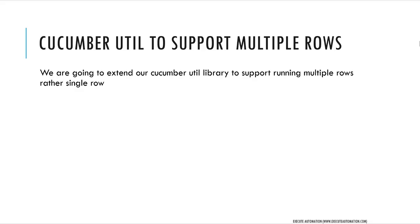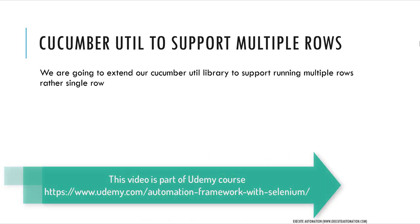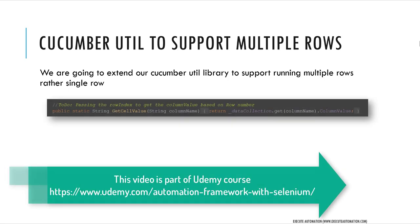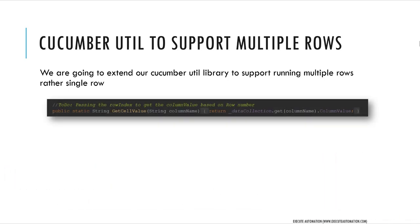We are going to extend our Cucumber utility library to support running multiple rows rather than just single rows. Our current code to read information from Cucumber's data table library has a getCellValue method, which takes a column name and returns the column value from the data collection. This assumes only one row exists. There's a TODO to support passing a row index to get the column value based on row number, which was not yet done.